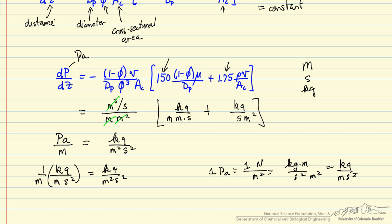So a couple things to point out about this equation. It's a negative sign here because as we move down the reactor and Z increases, the pressure decreases.